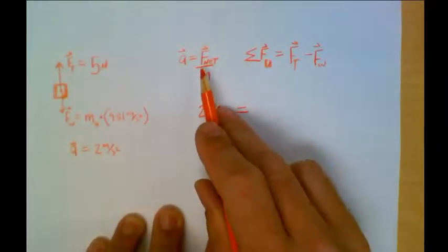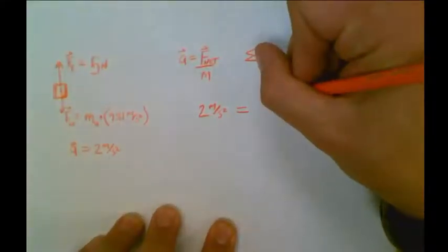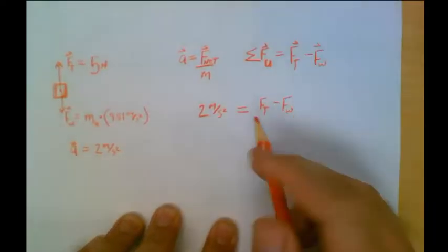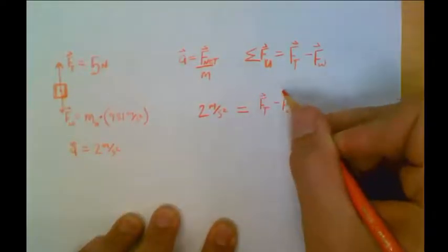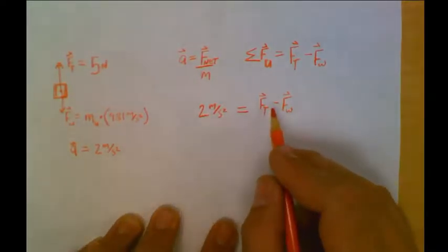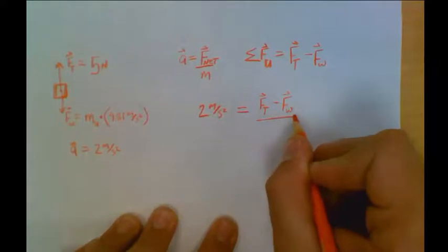The net force, we can substitute this right here in for the net force, because they're the same thing, the force of tension minus the force of weight. These forces are acting in opposite directions, so we're going to subtract them. If they were both acting up, we'd add them together. Hopefully that makes sense to you.